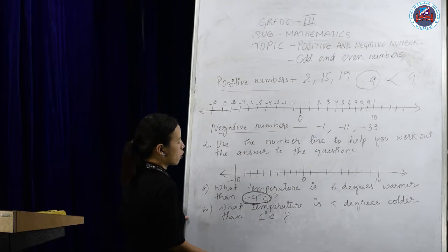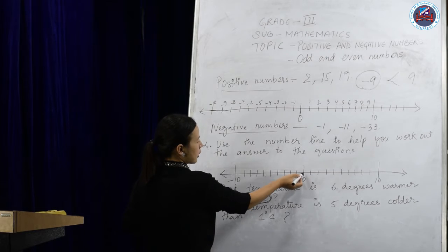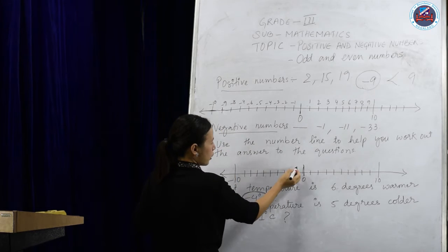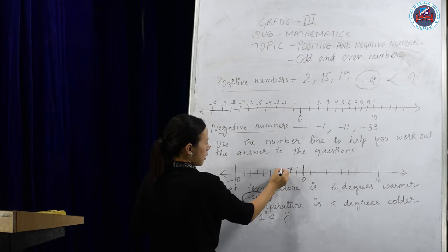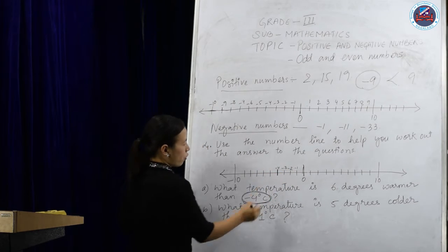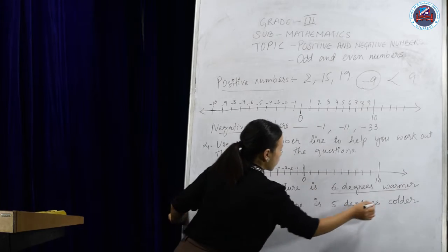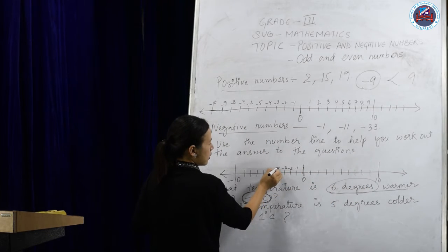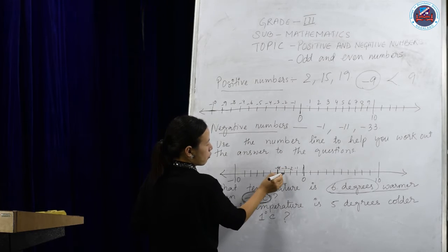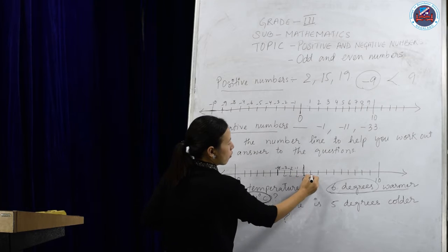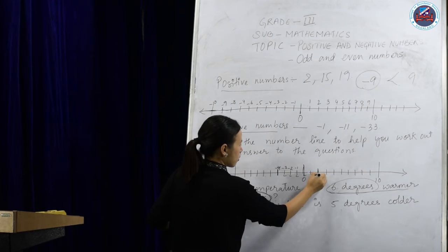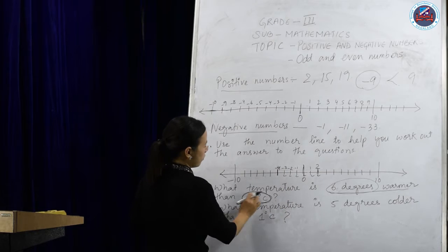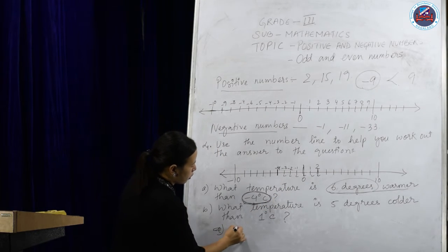So here it says minus 4 degrees Celsius. We'll find where minus 4 is — from zero, going to the left side, we count minus 1, minus 2, minus 3, and minus 4. It says the temperature is 6 degrees warmer, so it will go up. We count forward 6 from minus 4: 1, 2, 3, 4, 5, and 6. After zero we count as 1, 2 — so your answer is 2 degrees Celsius.